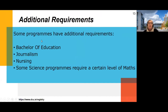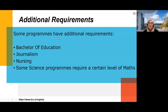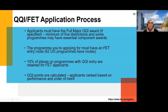Some programmes have additional requirements for mature applicants. The Bachelor of Education is set by the teaching council, so you need Irish. Journalism requires you to submit something you've had published. Nursing has a separate assessment with the nursing board, so you have to contact them. Some science programmes require a certain level of maths. Otherwise, for all other programmes, a good personal statement gives you a very good chance of being successful. We take 10% of places for matures — it's a really good way to get in.